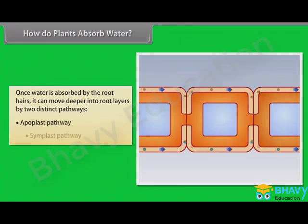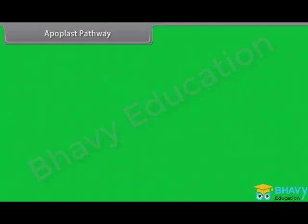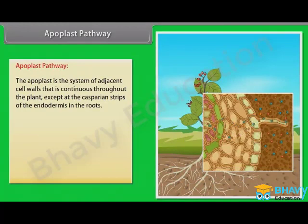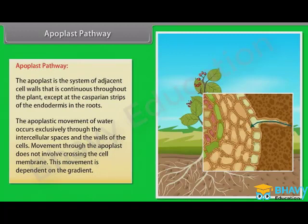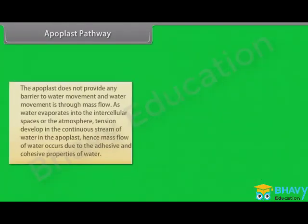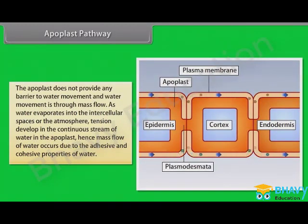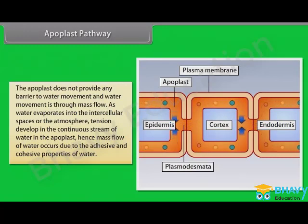The two pathways are the apoplast pathway and the symplast pathway. The apoplast is the system of adjacent cell walls that is continuous throughout the plant, except at the Casparian strips of the endodermis in the roots. Apoplastic movement of water occurs exclusively through the intercellular spaces and the walls of the cells. Movement through the apoplast does not involve crossing the cell membrane and is dependent on the gradient. As water evaporates into the intercellular spaces or the atmosphere, tension develops in the continuous stream of water in the apoplast. Mass flow of water occurs due to the adhesive and cohesive properties of water.